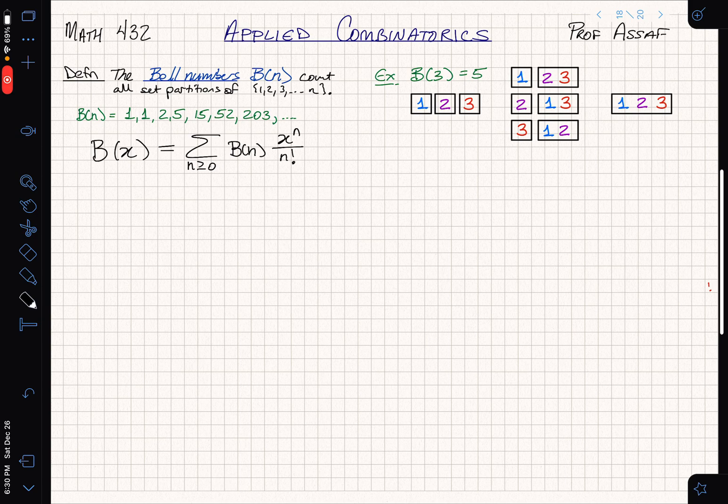By definition, this is the sum overall n of the Bell numbers times x to the n divided by n factorial. That normalizes things so they're not going to grow too fast. As we're trying to figure out how these go, let's think about what we know about the Bell numbers.